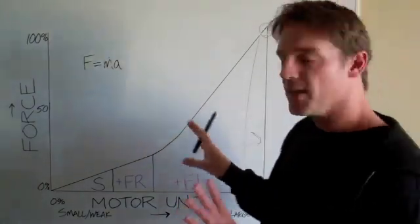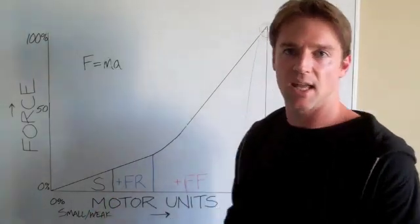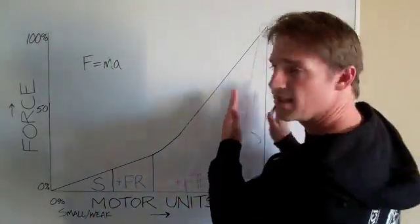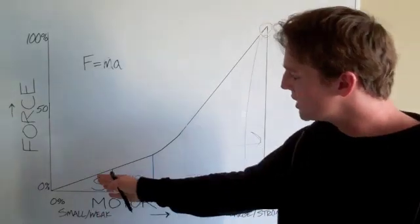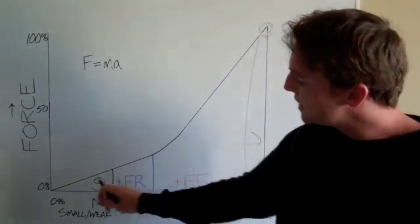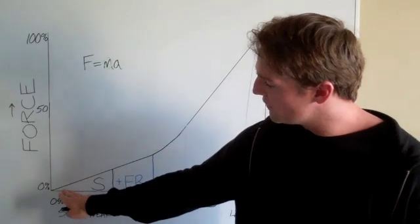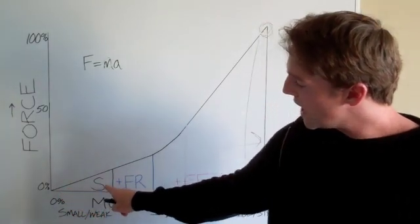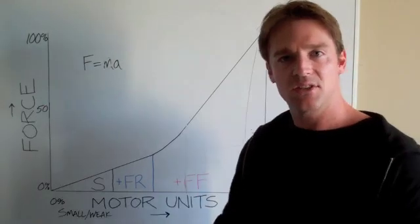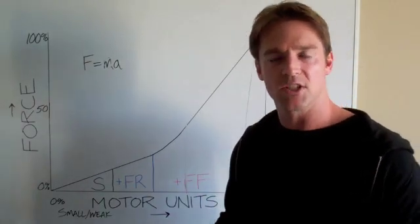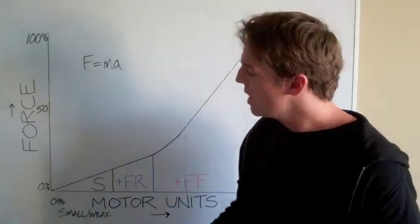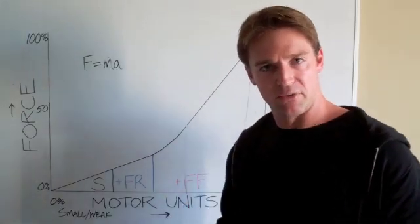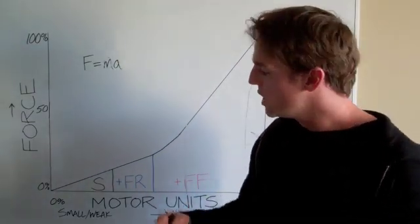Now, this is really important information to understand because it's this area of the spectrum that contains the largest, strongest motor units. So, if we look at the motor unit recruitment here, we see that at the lowest levels of force, you have the S motor units. S just stands for the slow twitch muscle fibers that are contained within those motor units. They result in very low levels of force when they're recruited.